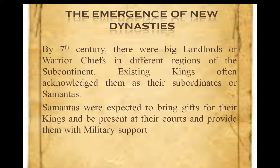In the first topic of the chapter, we will learn the emergence of new dynasties. Emergence means rise and dynasty means royal family. By the 7th century, there were big landlords or warrior chiefs in different regions of the subcontinent. Landlord means zamindars — one who has a big land, is the owner of a vast area, and collects taxes from that land.